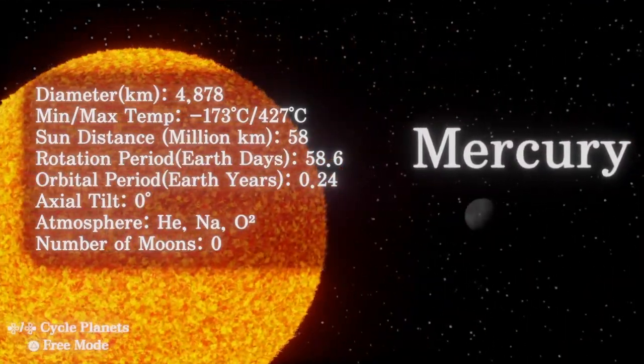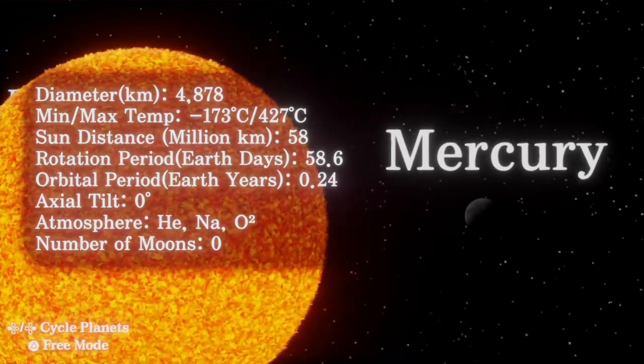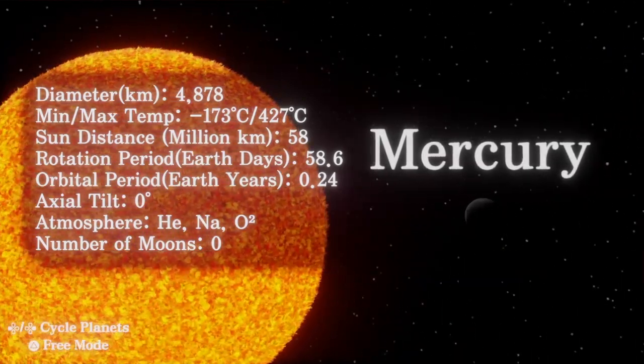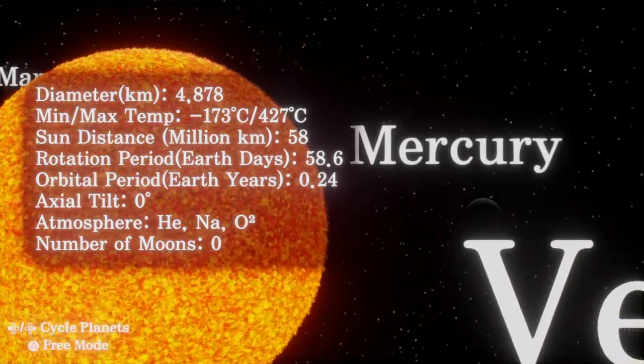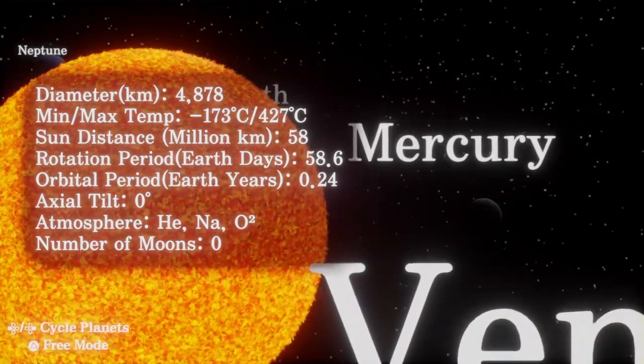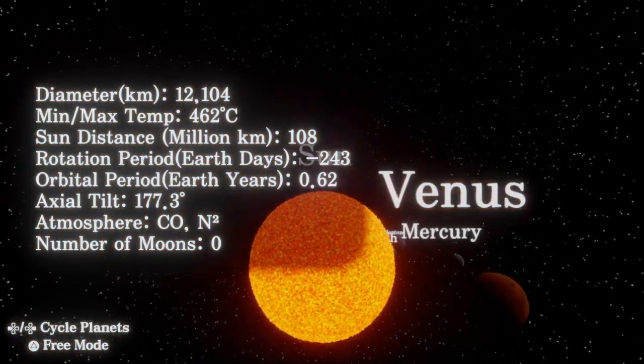Mercury, the smallest planet of the solar system family and the closest to the Sun. It only takes about 88 Earth days for Mercury to make a full trip around the Sun.